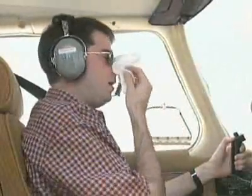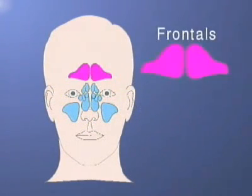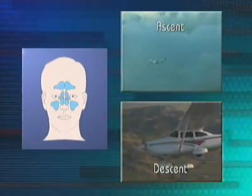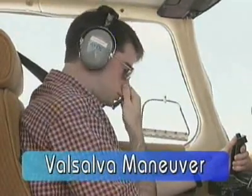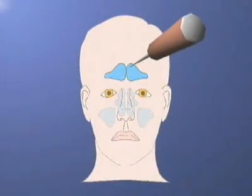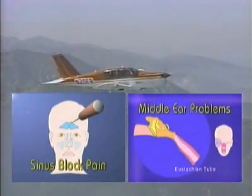A similar trapped gas problem can be experienced when an individual's sinuses cannot equalize the air pressure changes due to sinus duct blockage, commonly caused by colds or allergies. The most commonly affected sinuses are the frontals and maxillaries. They can cause trouble on both ascent and descent; however, you are more likely to experience difficulties on descent. The Valsalva maneuver is one effective method in providing relief for sinus blockage. A sensation of fullness may or may not appear before the onset of sudden pain — sinus block pain feels like an ice pick in the face. Notably, the onset of sinus block pain can occur faster than middle ear problems and can become incapacitating, giving the aircrew little time for decision making.